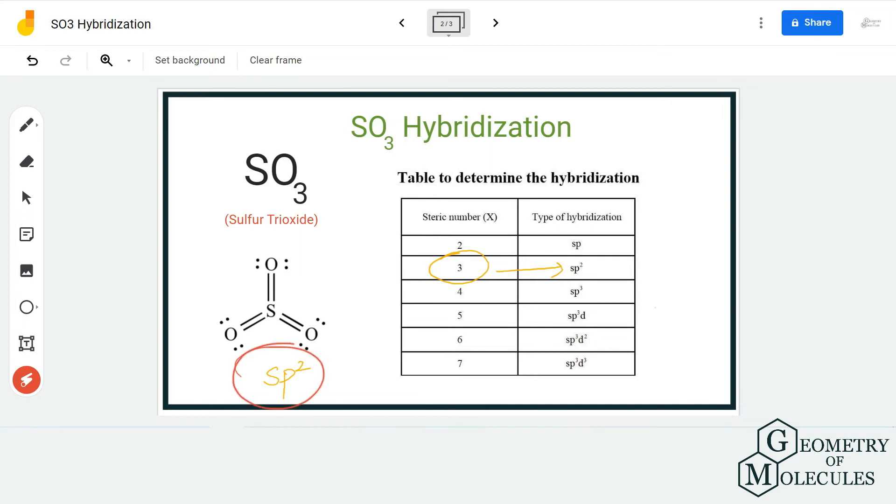That is because each sigma bond will occupy one of the orbitals, which results in the sp2 hybridization of the sulfur atom. So sulfur atom will have sp2 hybridization for all these three atoms of oxygen, and as a result, the hybridization of SO3 molecule is sp2.